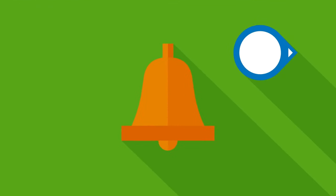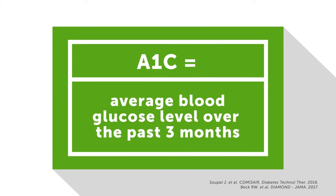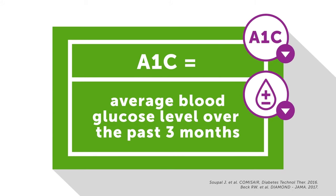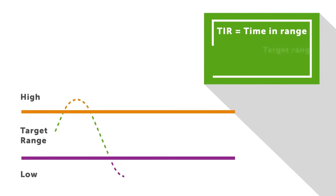With Dexcom G6, alerts for rising or falling levels help manage diabetes both when awake and asleep. Clinical studies have shown that Dexcom RTCGM use is proven to both reduce HbA1c and time spent in hypoglycemia among people with type 1 diabetes, regardless of their insulin delivery method.